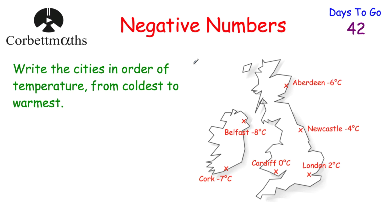To start off with, here's a question for you to try. Here's a map and we've got some cities: Aberdeen, Newcastle, London, Cardiff, Cork and Belfast. Can you write the cities in order of temperature, starting from the coldest and going to the warmest? Feel free to press pause and do that now.